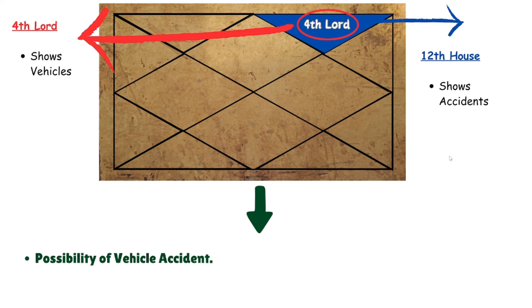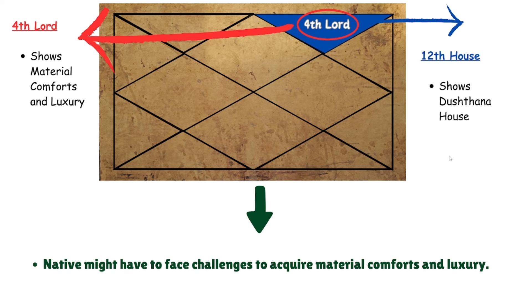The fourth lord shows vehicles and the twelfth house shows accidents, so with the fourth lord in the twelfth house there is a possibility of a vehicular accident and you should be cautious while driving. The fourth lord also shows material comforts and luxury, and since the twelfth is a dushthana house, you may face challenges acquiring material comforts, but in the later half of life, based on your efforts, luck and fortune may start to support you and things will improve.